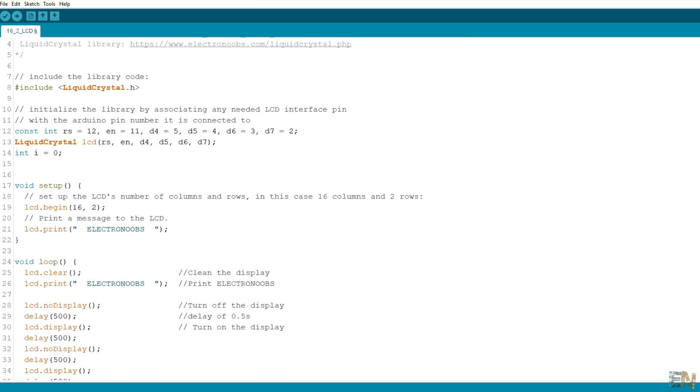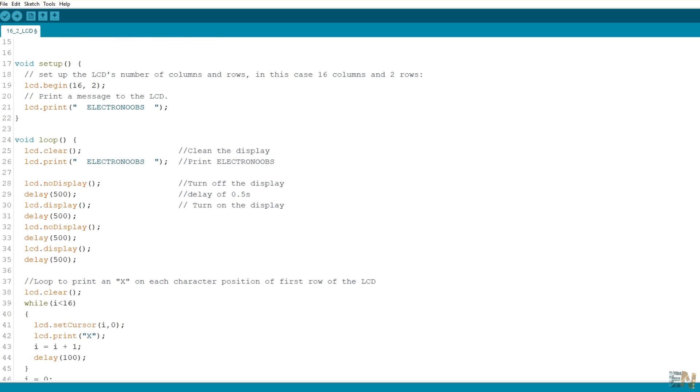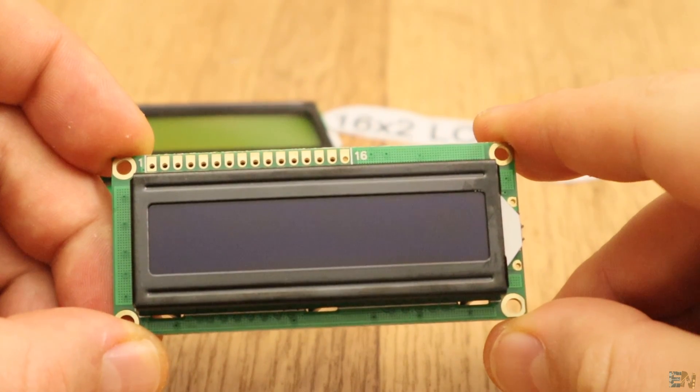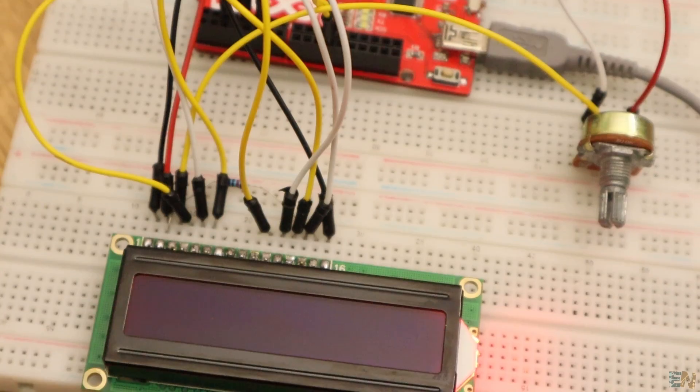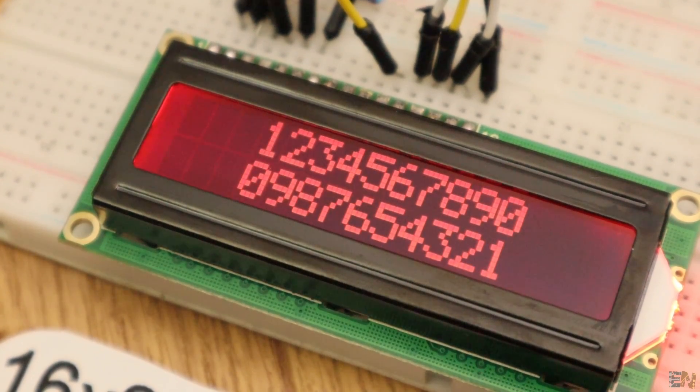Then in the code you have comments for all the steps and in the void loop you have a few examples. This LCD is very simple, so I will only show you how to print text and numbers. I upload the example and there you have it. I can print text, numbers and some special characters on the LCD.